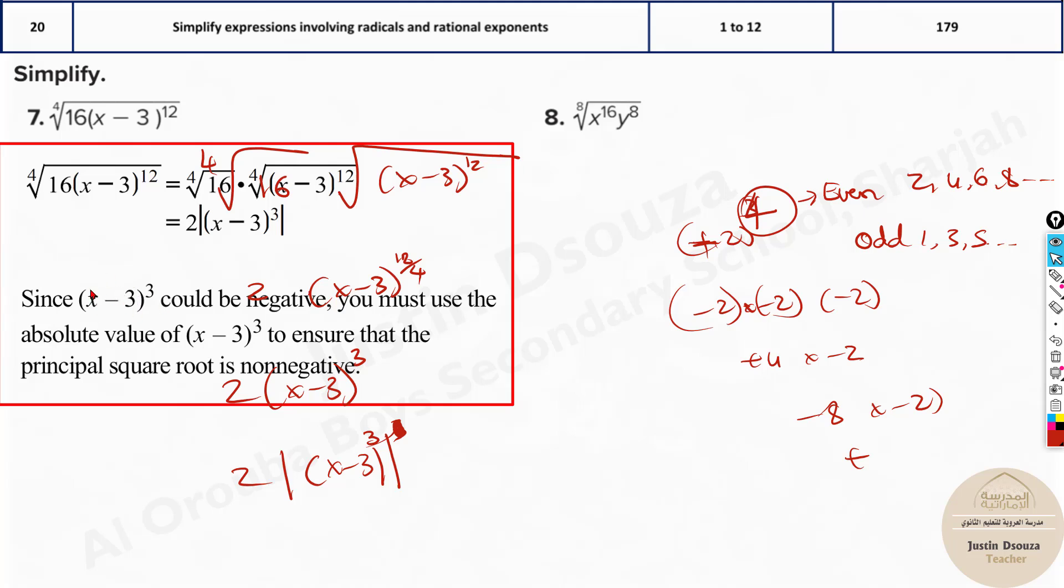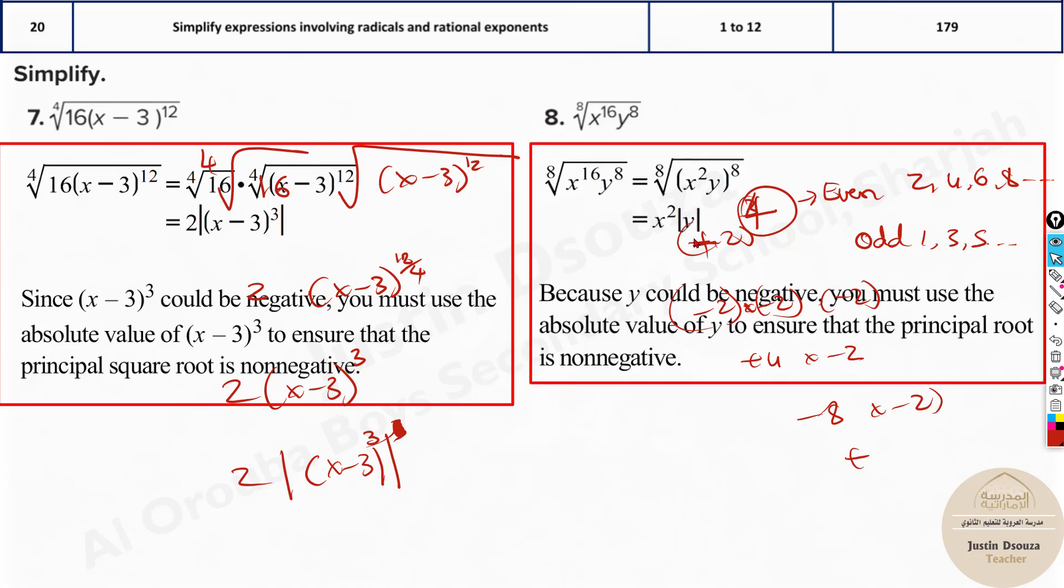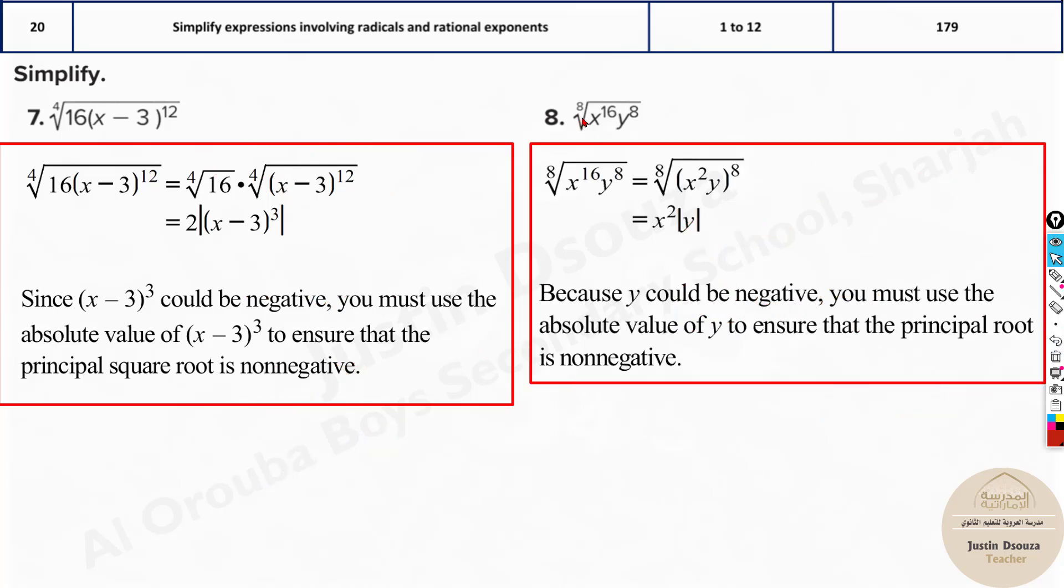Now here because this only term could be negative, you must have the absolute value. That means it will be a non-negative answer. Same way over here you can directly jump to the answer. It's divide, 16 divided by 8 is 2, and y divided by 8 divided by 8 is 1. But since this is odd power you put the modulus of it.